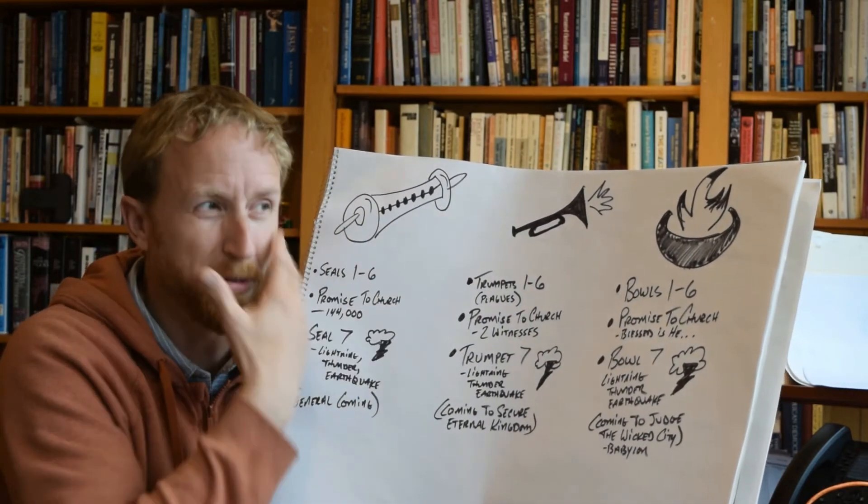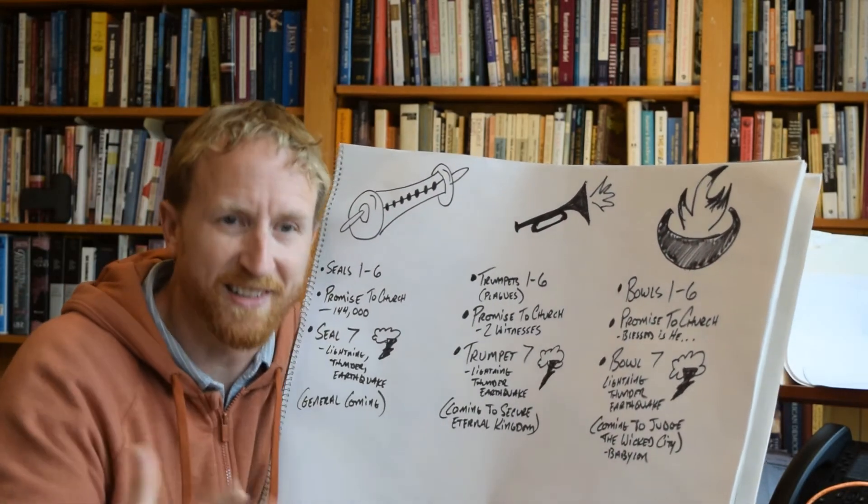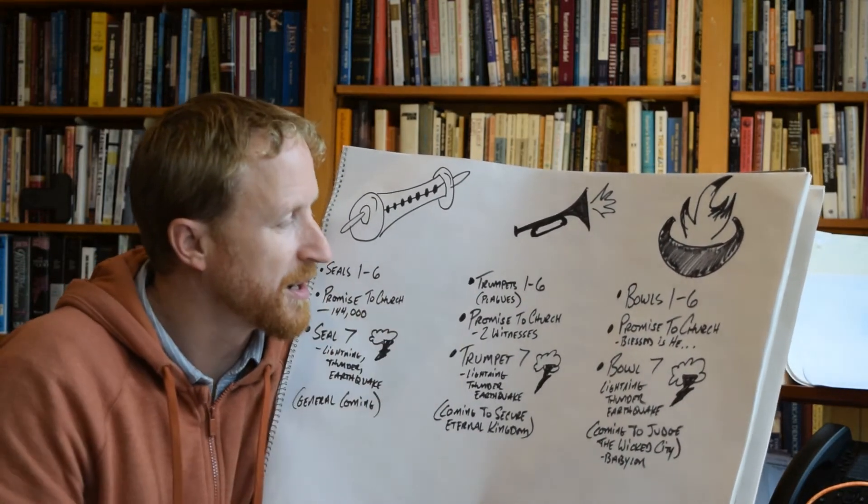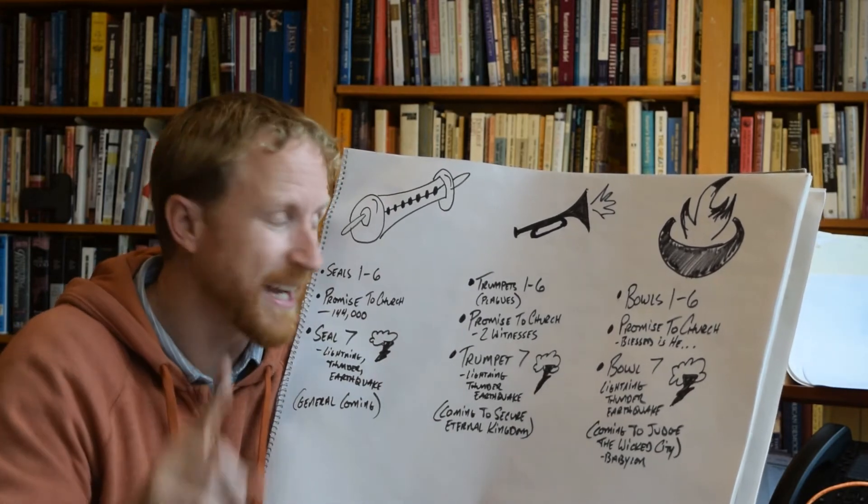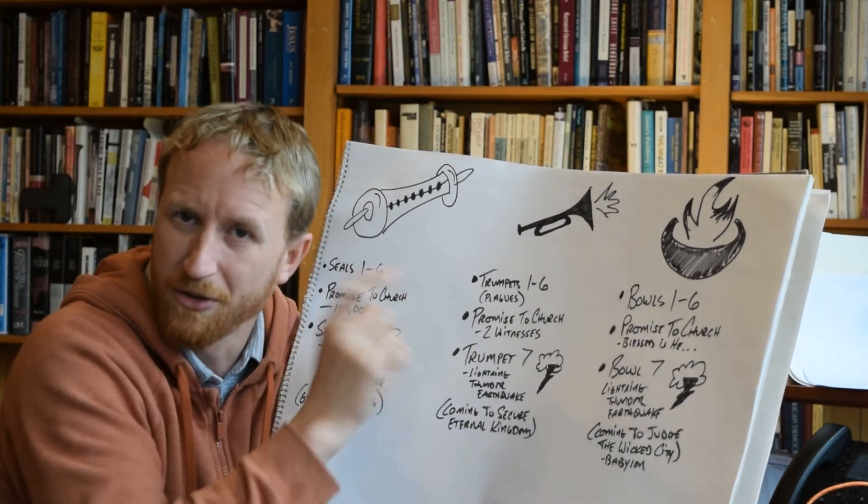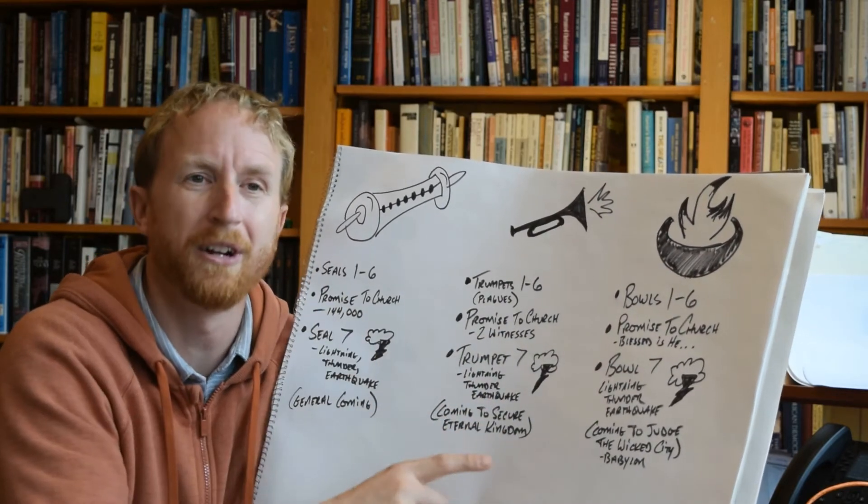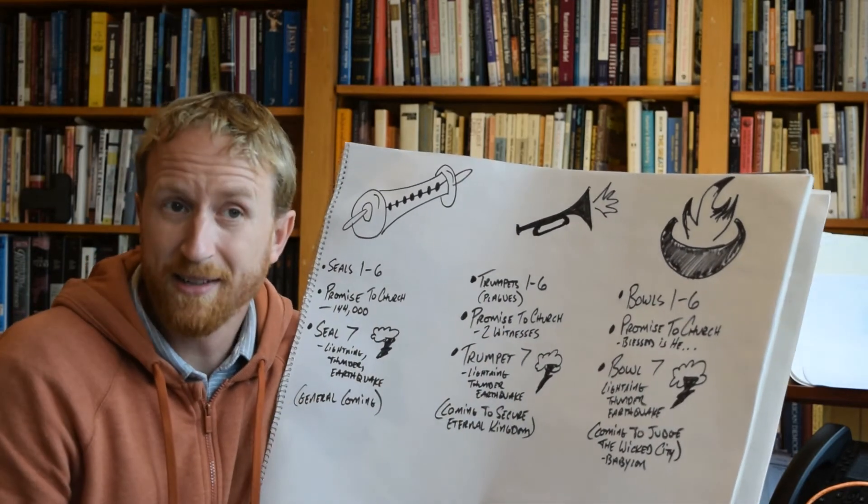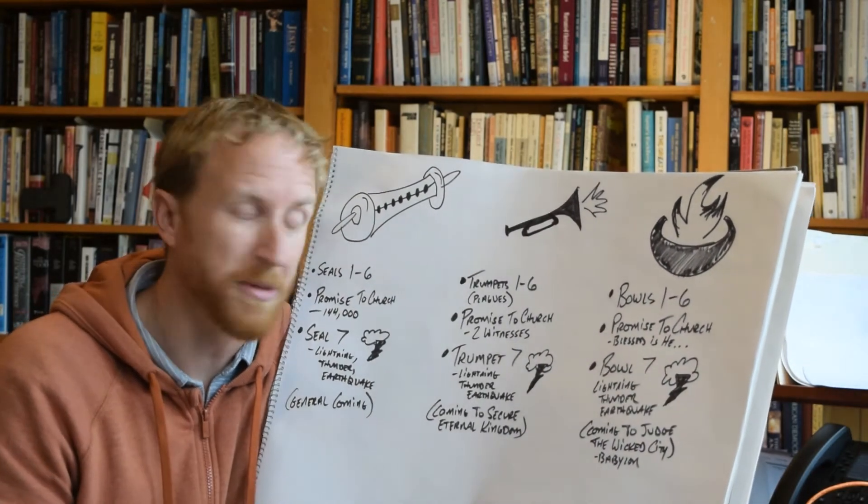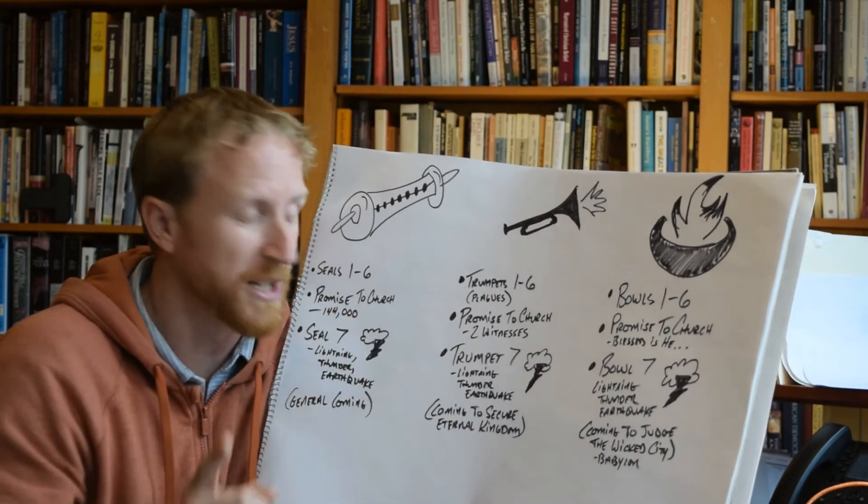This time, the six trumpets seem to resemble the plagues that God sent upon Egypt to lead Egypt in repentance and to let his people free. And Egypt doesn't repent in a similar way. The inhabitants of the earth don't repent in light of these plagues, at least not yet. After the sixth plague, there's an interlude, and we get another word of promise, or another little story about promise, or an assurance to the saints in the story of these two witnesses who suffer the wrath of God's enemies, but God delivers them from them. He breathes new life into them, and he gives them victory over God's enemies, which actually does a really cool thing among these unrepentant nations. Hold on to that. We'll get there when we get there.